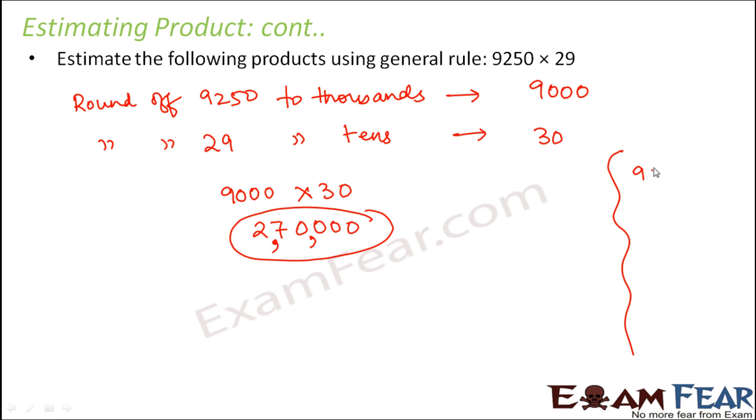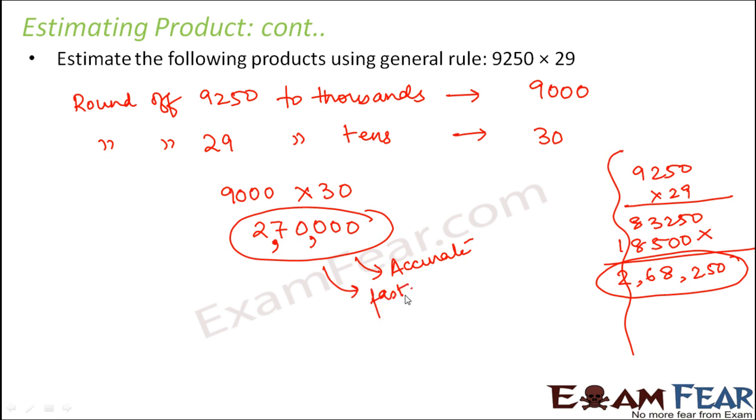This is a quick calculation and which is kind of accurate. If you want to see the exact value, then just multiply this. So this is the accurate value, this is the exact value. This value is quite close to it, so this is accurate and this is also fast. So we could have a sensible estimate of the product.